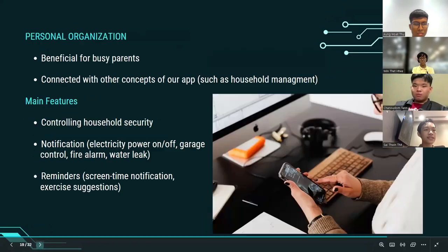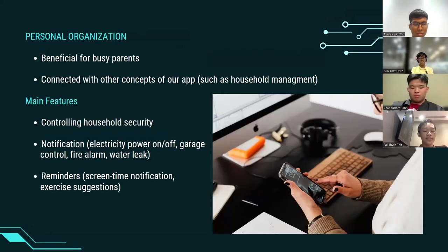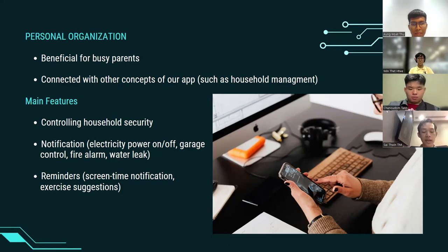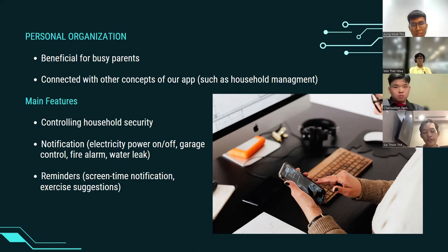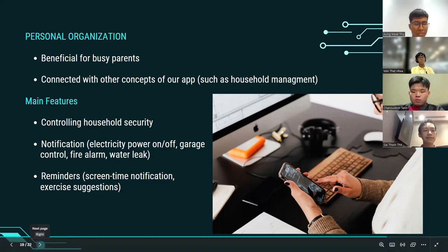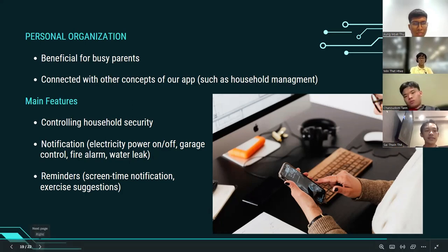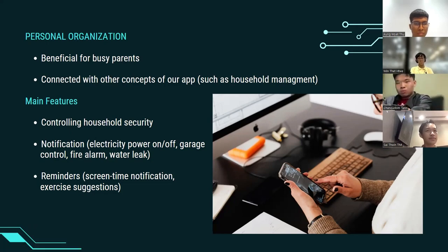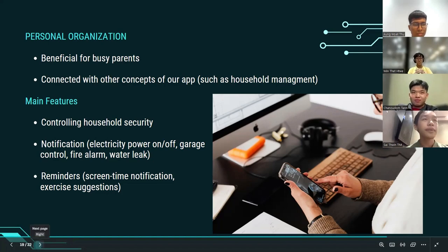For the last part of the work category, we would like to focus on personal matters. This area is a bit related to the previous areas mentioned by other members. If you are a busy person and still want to look after your family and household, the following features will be useful for you. The app will notify you about what's going on in your household — for example, it will remind you if the kitchen stove is on or if you forgot to close your garage. Moreover, you will be able to control them over the app just by clicking the appropriate buttons.